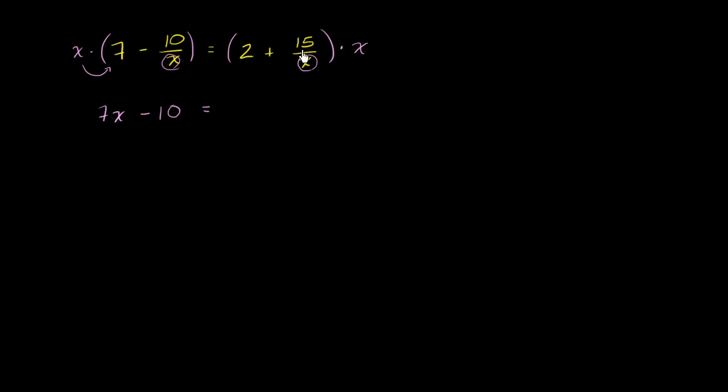And then your right-hand side, once again, distribute the x. x times 2 is 2x. x times 15 over x. Well, x times something over x is just going to be the something. x times 15 over x is just going to be 15 plus 15. So now we've simplified this to a linear equation.